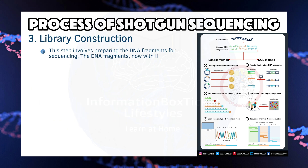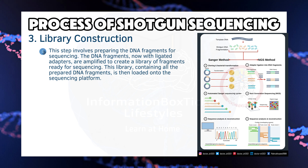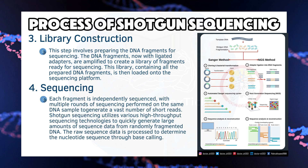Step 3 — Library Construction: This step involves preparing the DNA fragments for sequencing. The DNA fragments, now with ligated adapters, are amplified to create a library of fragments ready for sequencing. This library, containing all the prepared DNA fragments, is then loaded onto the sequencing platform. Step 4 — Sequencing: Each fragment is independently sequenced, with multiple rounds of sequencing performed on the same DNA sample to generate a vast number of short reads. Shotgun sequencing utilizes various high-throughput sequencing technologies to quickly generate large amounts of sequence data from randomly fragmented DNA. The raw sequence data is processed to determine the nucleotide sequence through base calling.